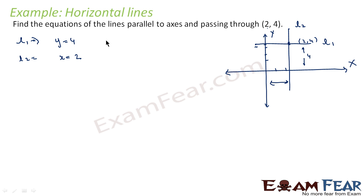Very simple — what we have done: we drew the xy coordinates, plotted the point (2, 4), then drew the line parallel to the x-axis and parallel to the y-axis, and formed the equations y is equal to 4 and x is equal to 2.